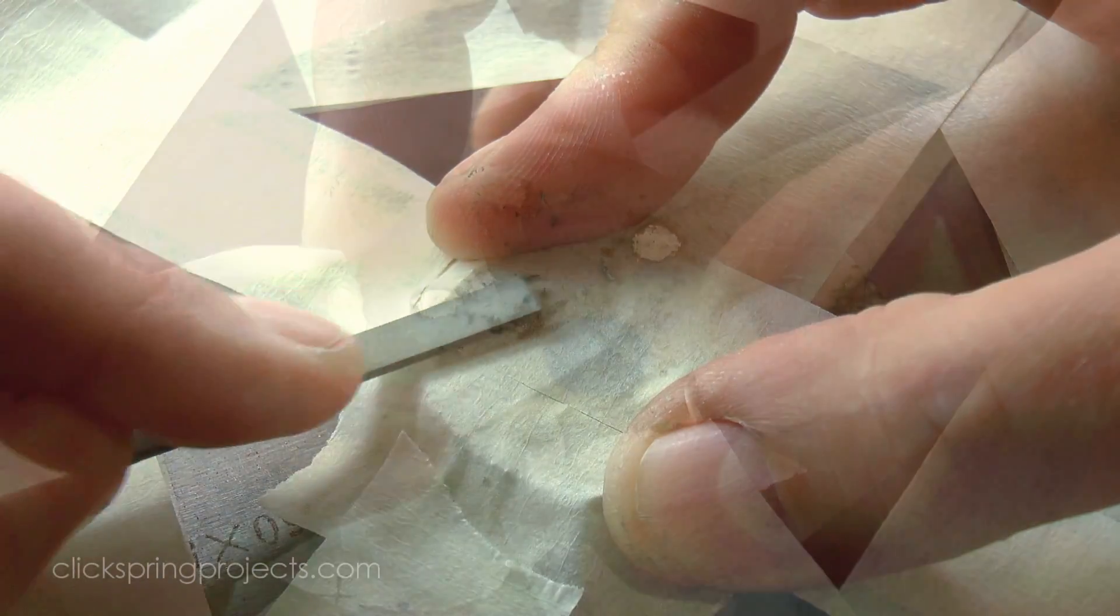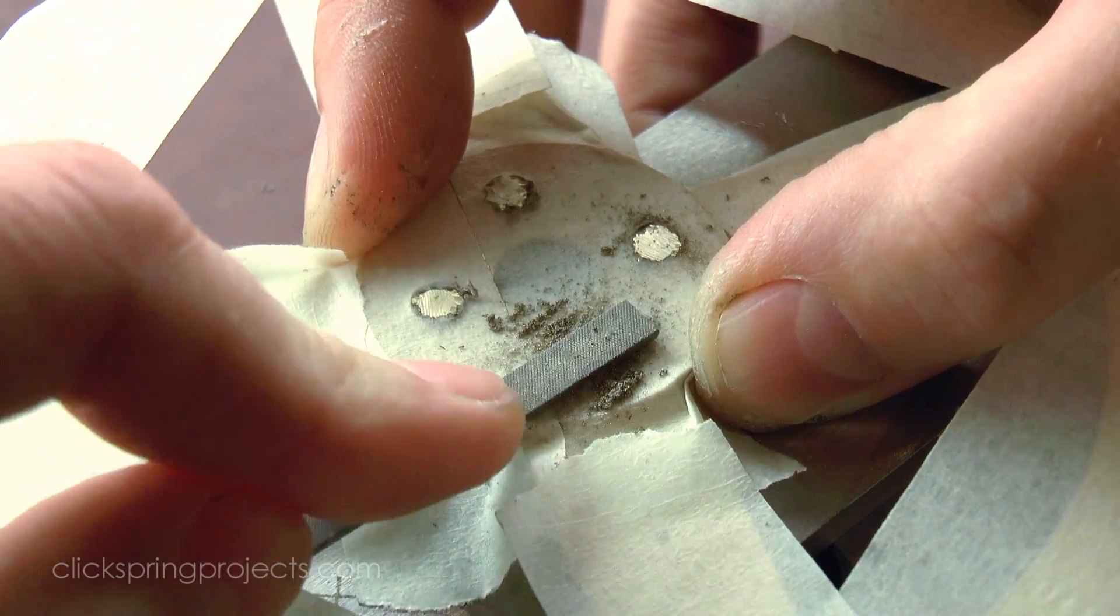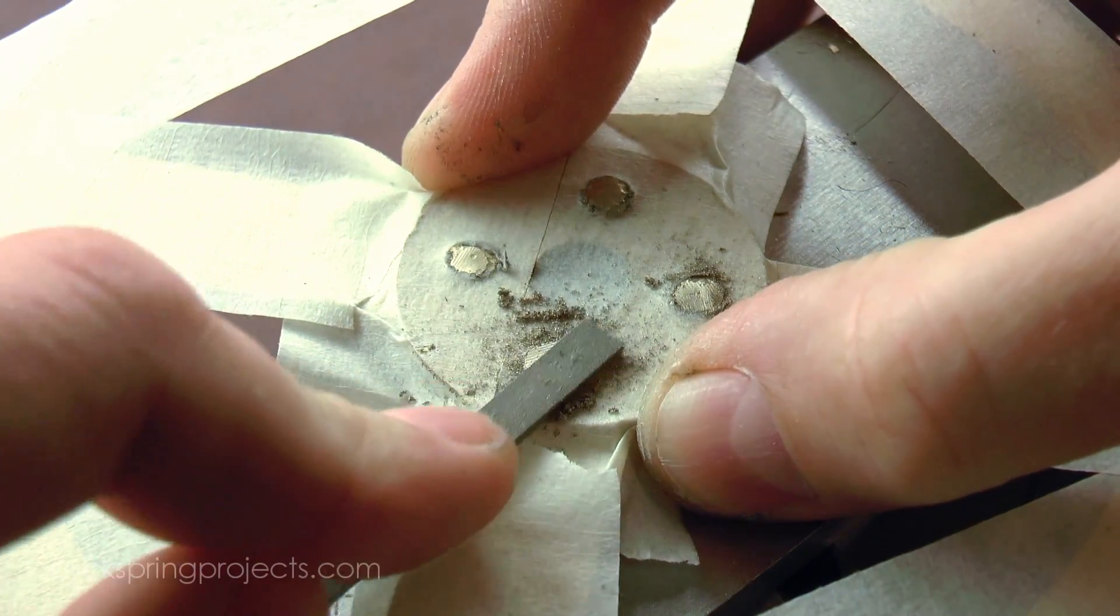And for the final step, I used a file and 800 grit abrasive paper to blend the rivets into the surrounding metal.